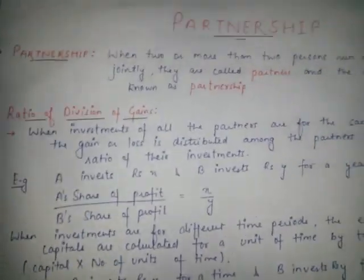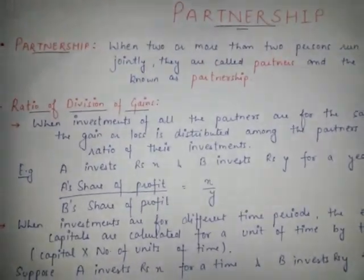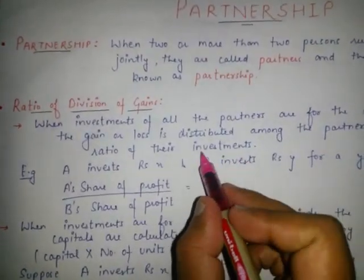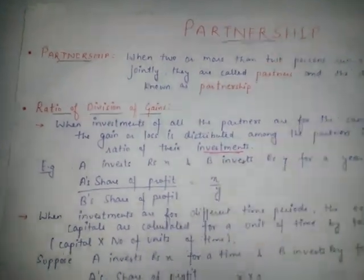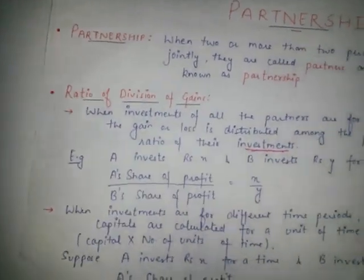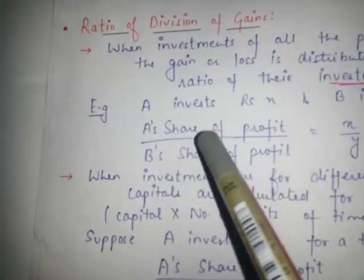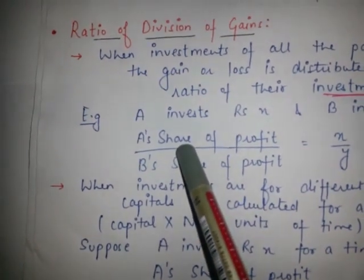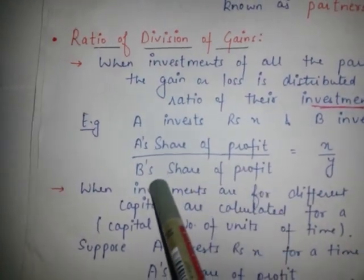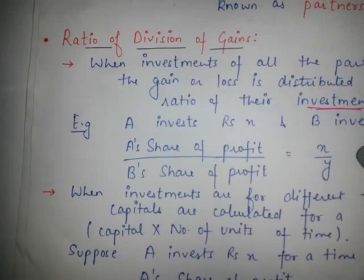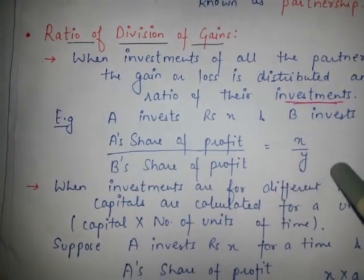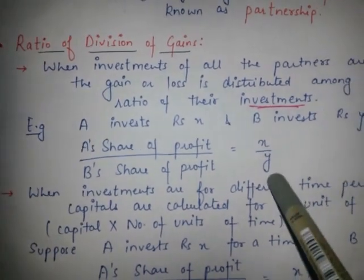In this case we only focus on the investment. A's share of profit and B's share of profit is equivalent to the ratio of A's investment and B's investment.